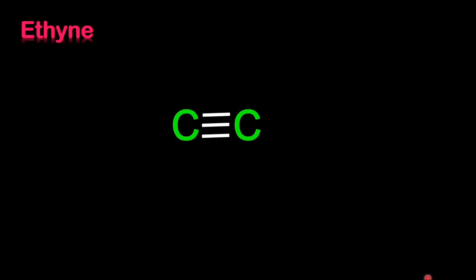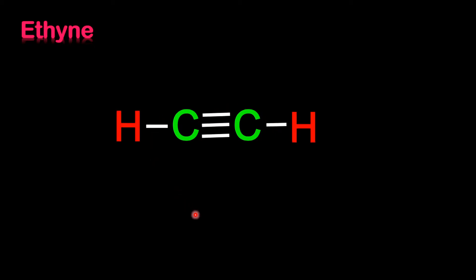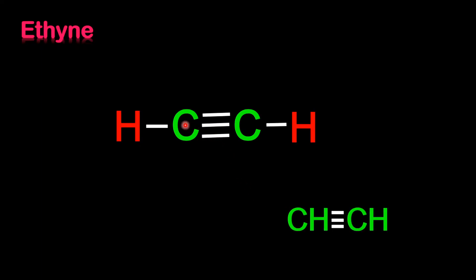Our first example is ethyne. The prefix 'eth' represents two carbon atoms, so there is a triple bond between the two carbons. Each carbon needs only one more bond, giving two lines total — so we attach one hydrogen to each carbon atom. The condensed structural formula is CH≡CH.